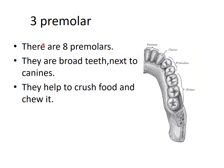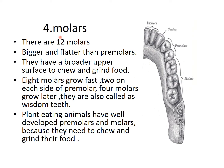Now coming to premolars. There are eight premolars — four on the upper jaw and four on the lower jaw. They are broad teeth next to the canines, and they are very broad on the surface. They help to crush food and chew it.